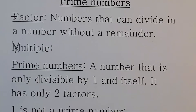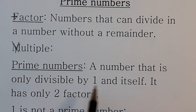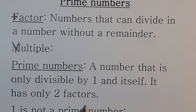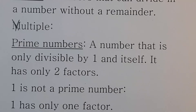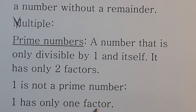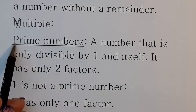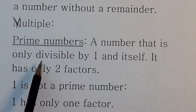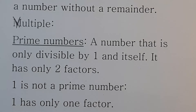Prime numbers are numbers that are only divisible by one and itself — the number only has two factors. So one is not a prime number because it has only one factor. The opposite of a prime number — numbers that are not prime — are called composite numbers, which are numbers that have more than two factors.